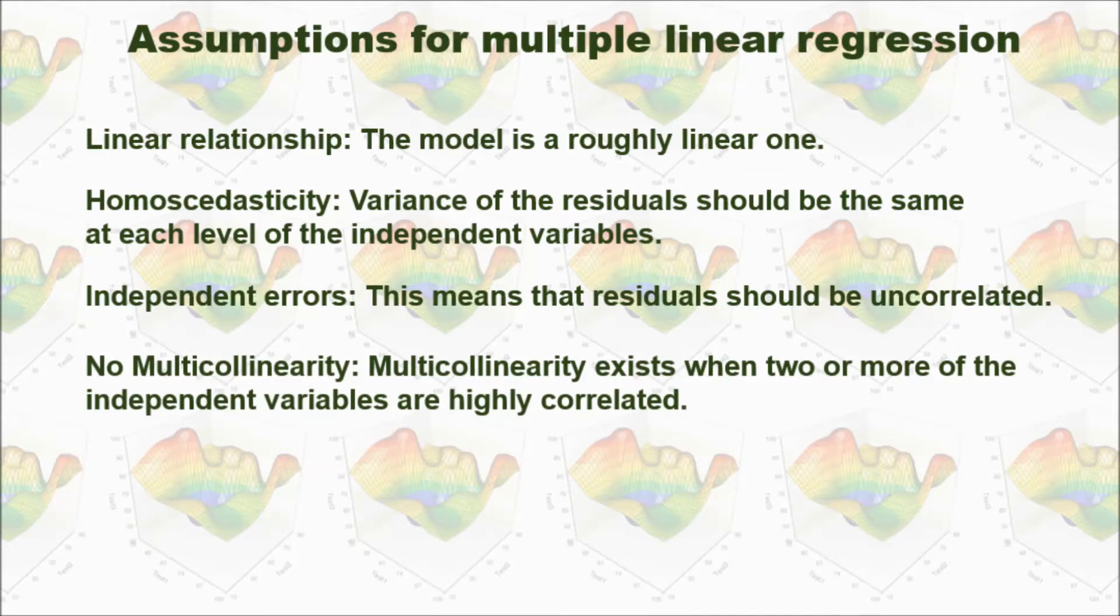The next assumption is there shouldn't be multicollinearity exists. That is, two or more of the independent variables should not be highly correlated.